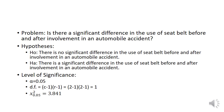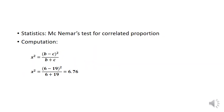For our problem statement: is there a significant difference in the use of seatbelt before and after involvement in an automobile accident? For our hypothesis: there is no significant difference in the use of seatbelt before and after involvement in an automobile accident. We are going to test this at alpha equal to 0.05. For the degrees of freedom, we have columns minus 1 times rows minus 1, which is 2 minus 1 times 2 minus 1, equal to 1. The chi-square tabular value at 0.05 is 3.841. The statistic we are going to use is McNemar's Test for Correlated Proportions.